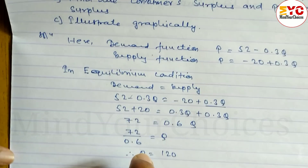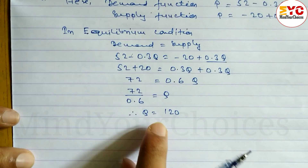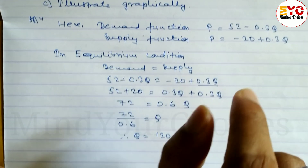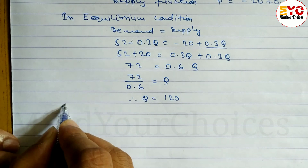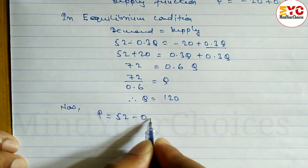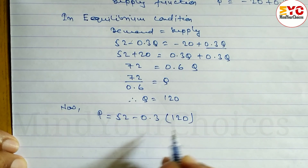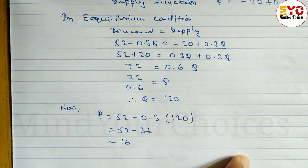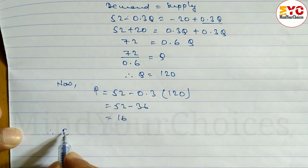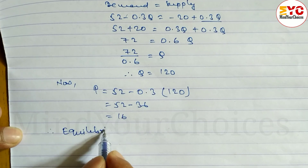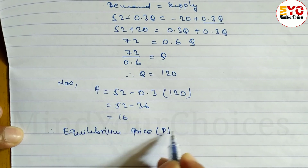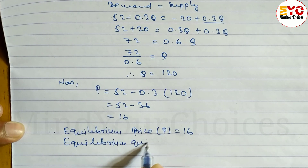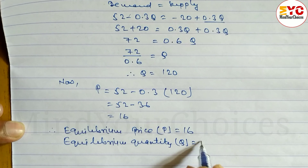Now we have to find out the equilibrium price. The equilibrium quantity is Q = 120. Now putting the value of Q into the demand function: P = 52 minus 0.3, putting Q = 120, so 52 minus — this multiplication gives 36 — is equal to 16. So the equilibrium price is P = 16, and equilibrium quantity is Q = 120 units.